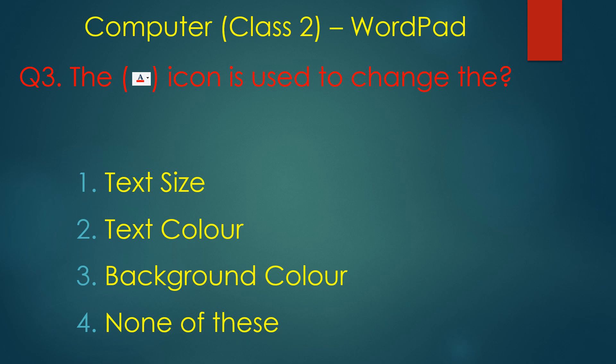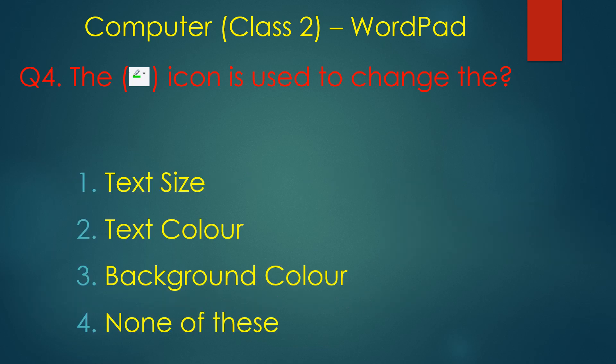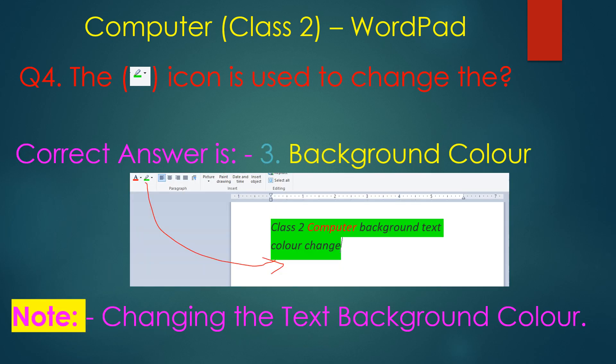This icon is used to change the text color. You select the text, then select the color to change the text color. This other icon is used to change the background color of text — you can change the background color using this icon.